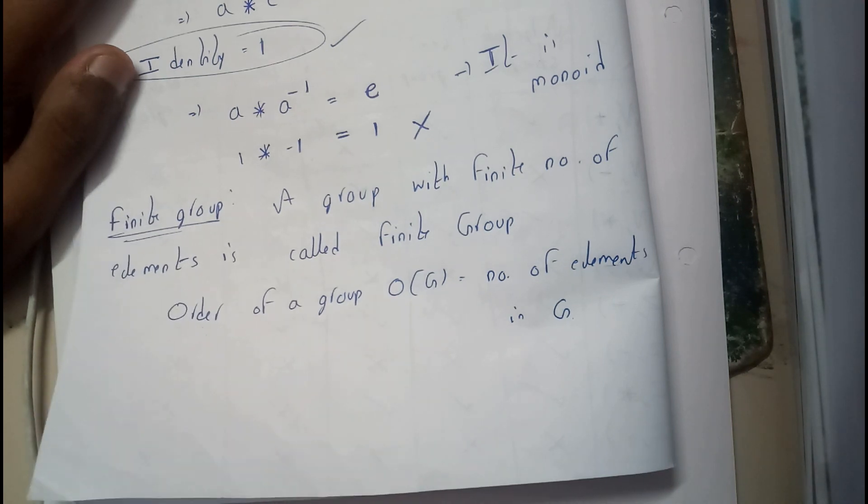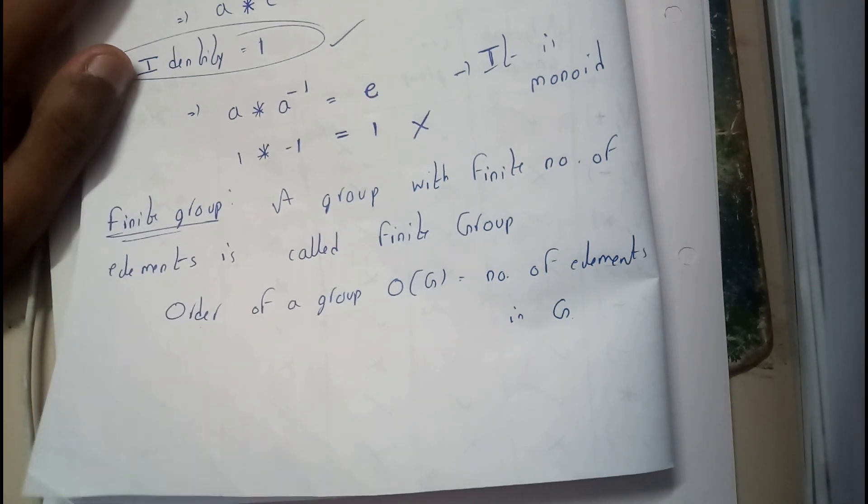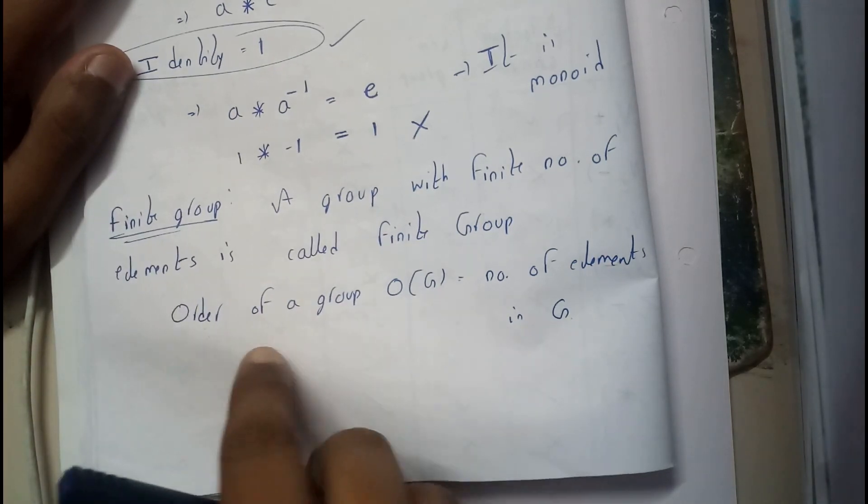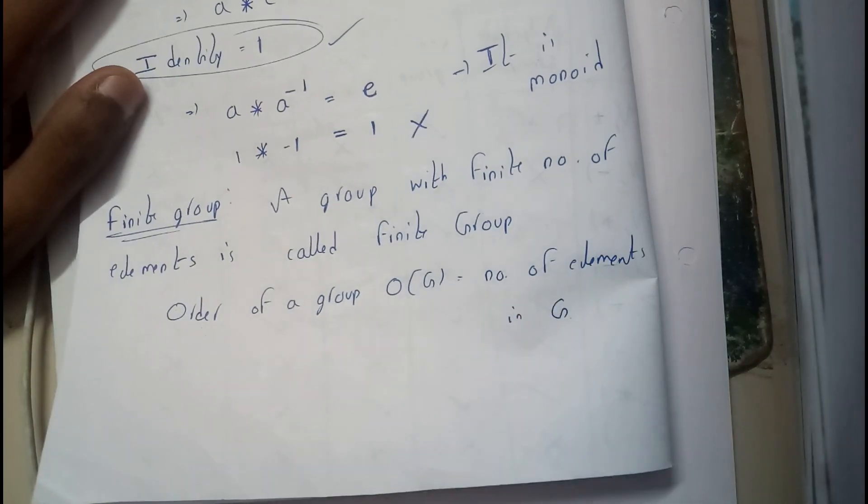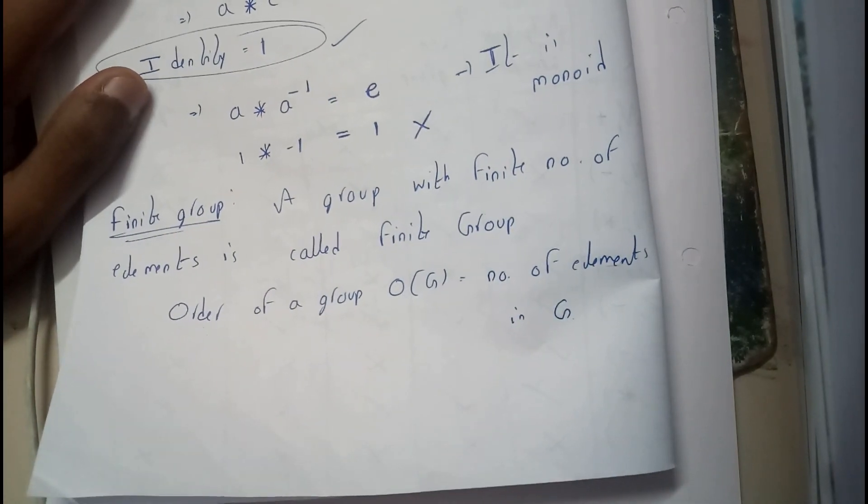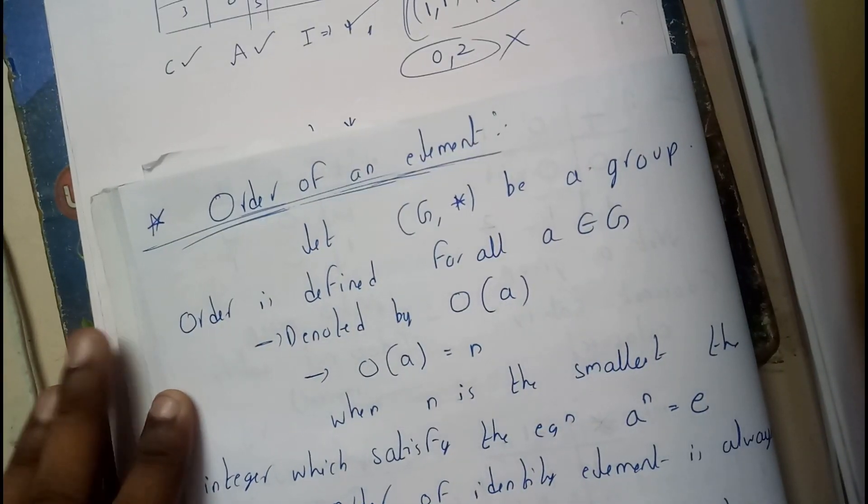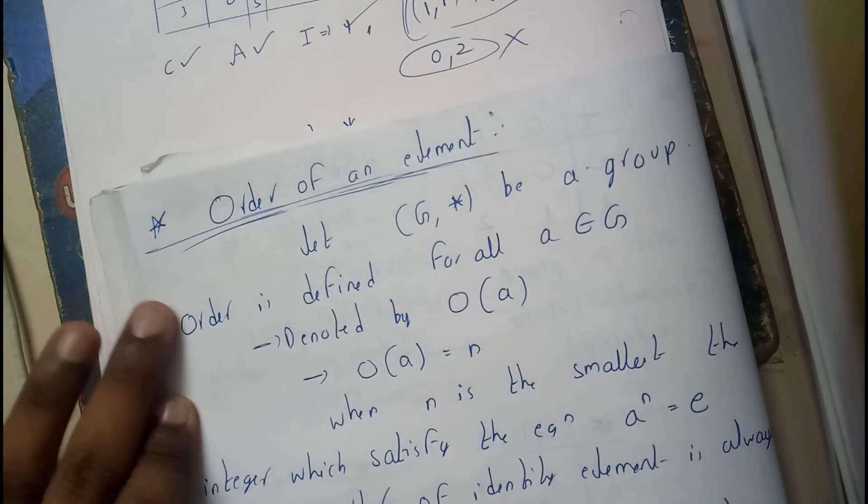A finite group is a group with a finite number of elements. The order of the group can also be defined as O(G) equals the number of elements in G.